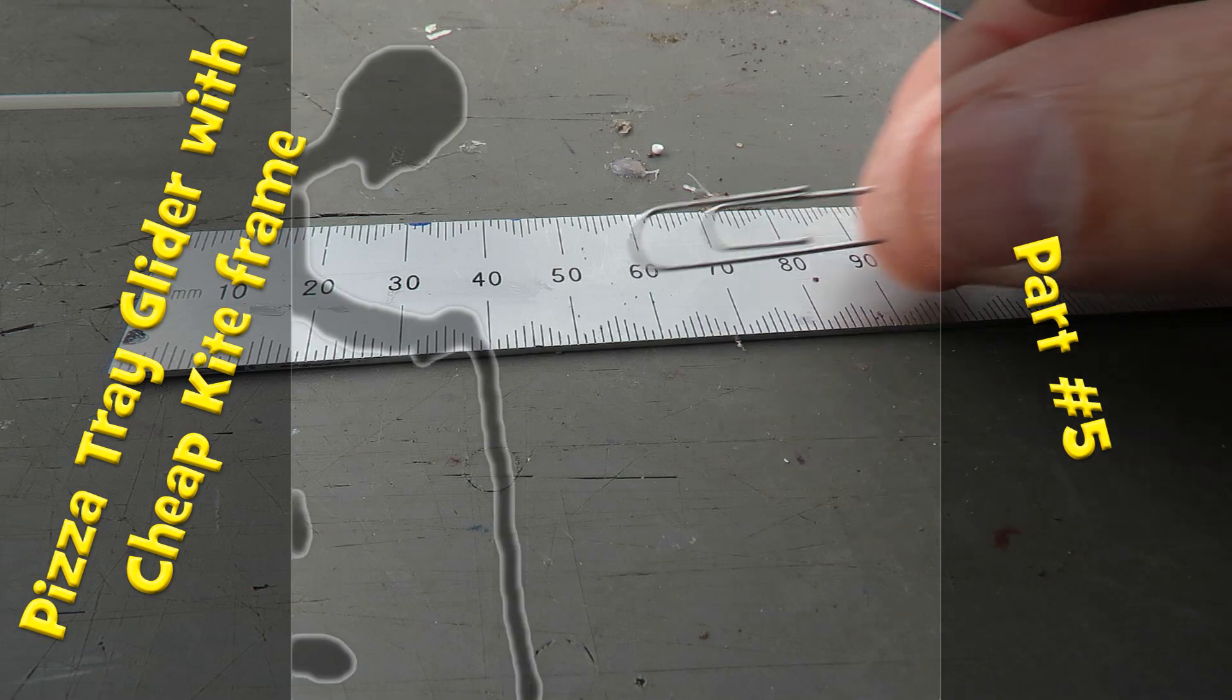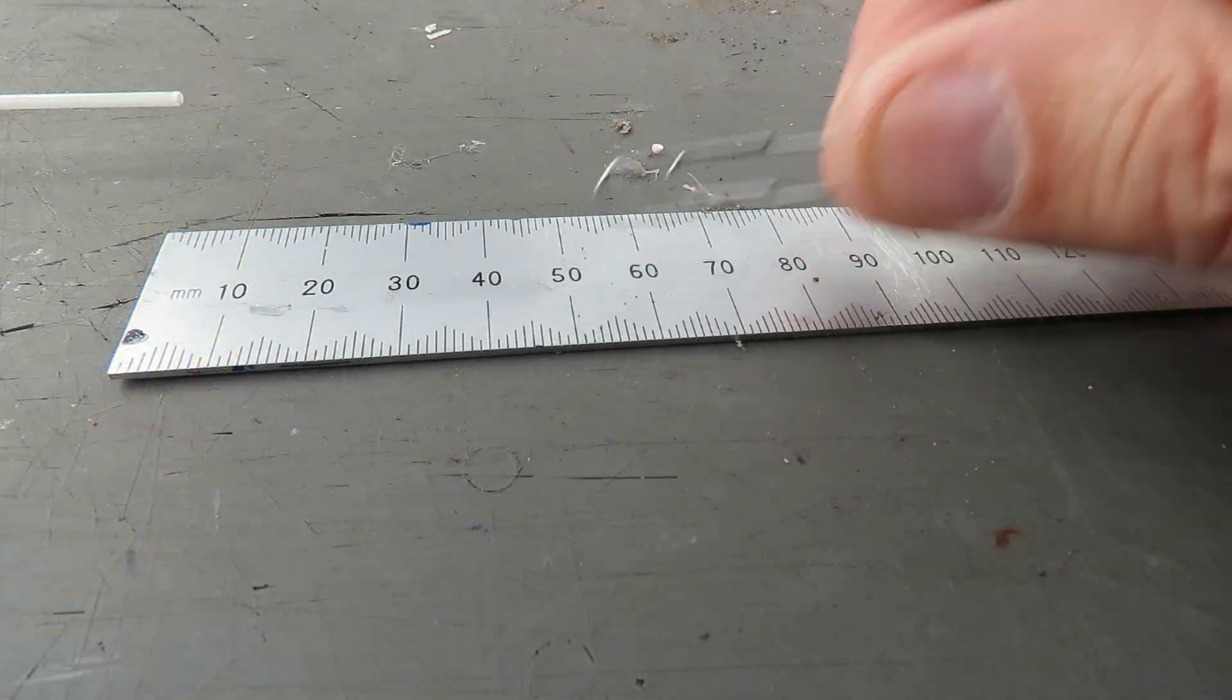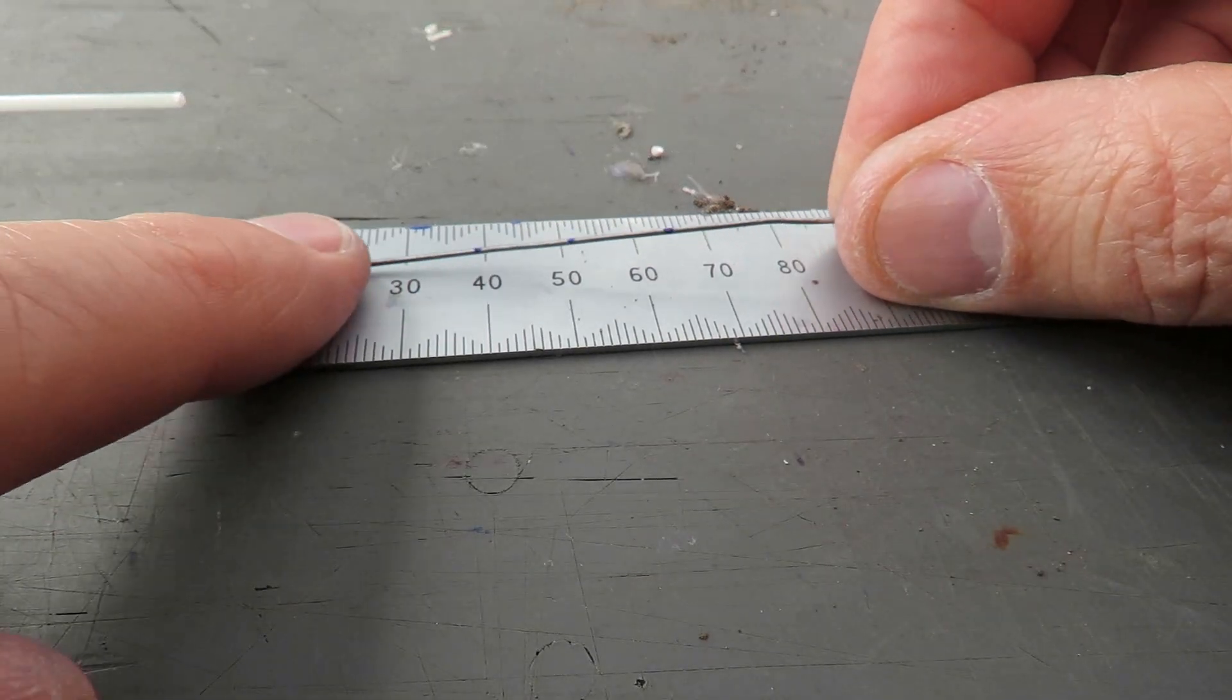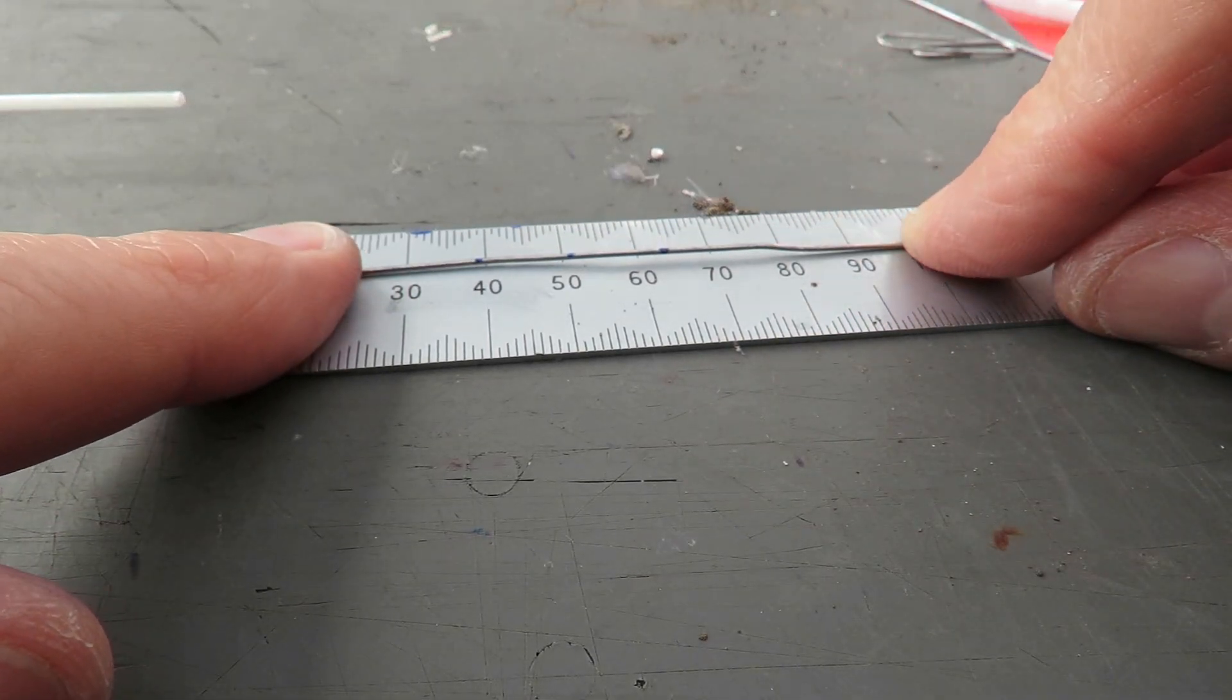I need to make an elevator horn so I'm going to bend up a paperclip. This is one I've straightened out. As you can see it's about 10 centimeters long.